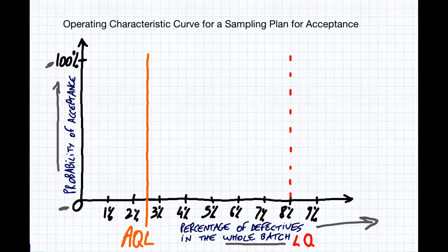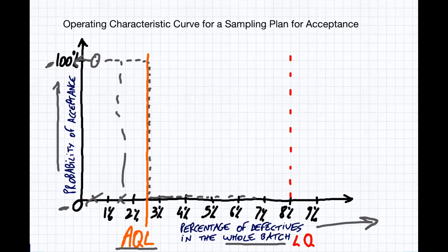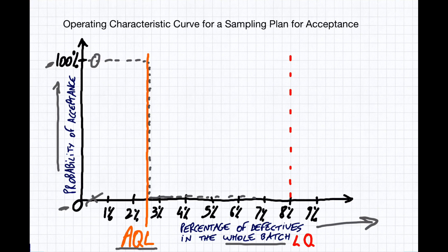Ideally we would have something that looks like this: it stays at 100% acceptance until it hits the AQL — the acceptance quality limit that you set — then it goes all the way to 0% acceptance. So if we have a batch with 0.5% defects, it's 100% accepted. If it's right at the AQL, it's still accepted. Just above it, it's rejected. This is the theoretical ideal, but it only works when we check the whole batch with a perfect inspection process that catches all defects.